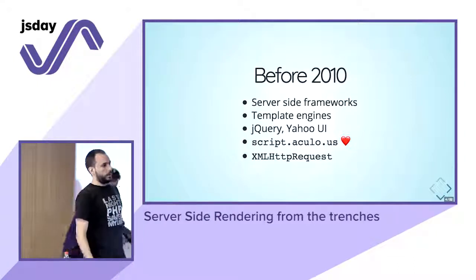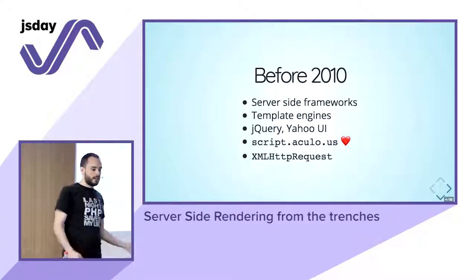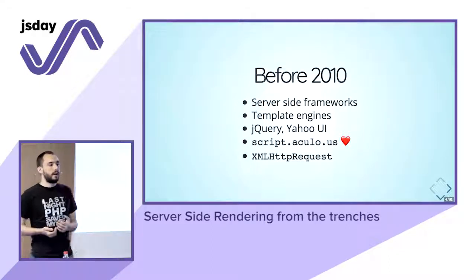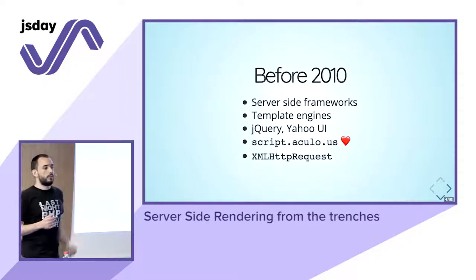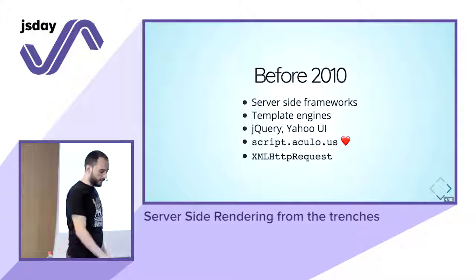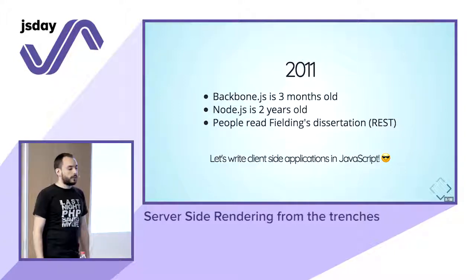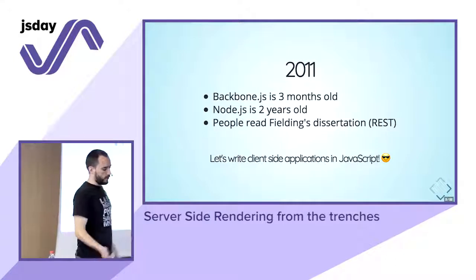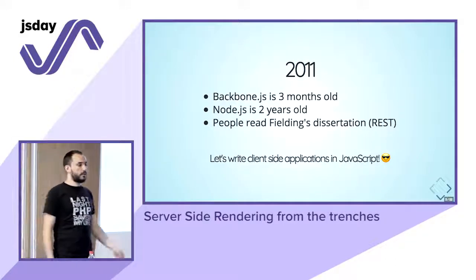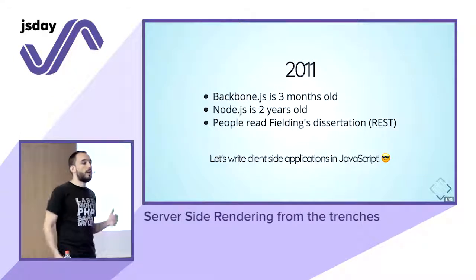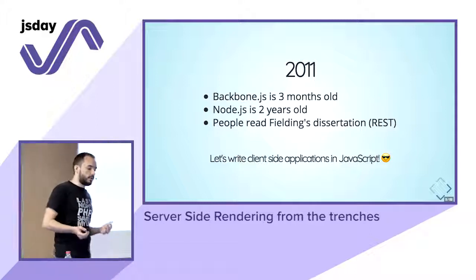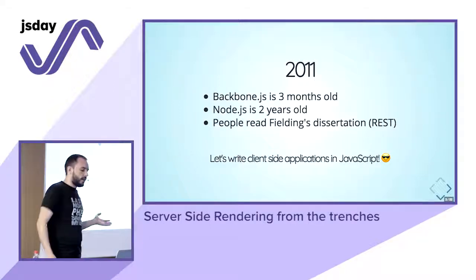At that time we were also doing a bit of Ajax with XMLHttpRequests, so we knew how to get data from the client to the server — we knew how to communicate between client and server. Then in 2011, Backbone was brand new, Node.js not so new, and people finally read Fielding's dissertation about REST architectures and how to write web services based on HTTP to write APIs.